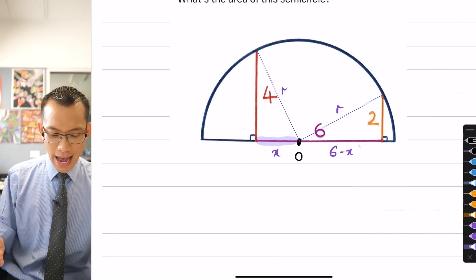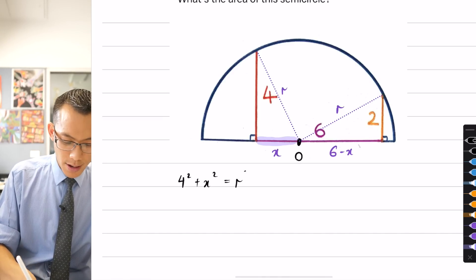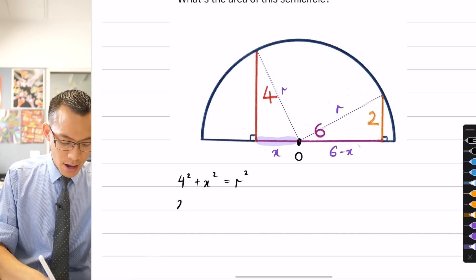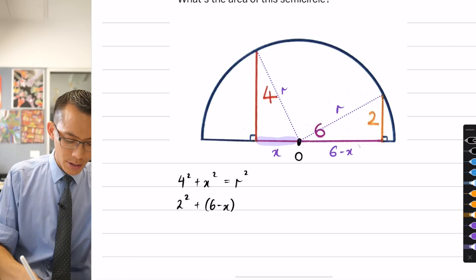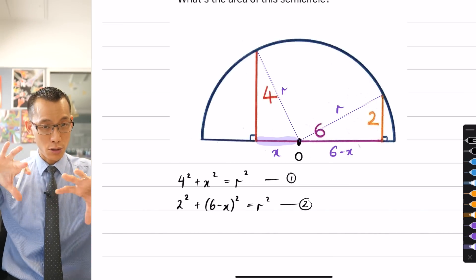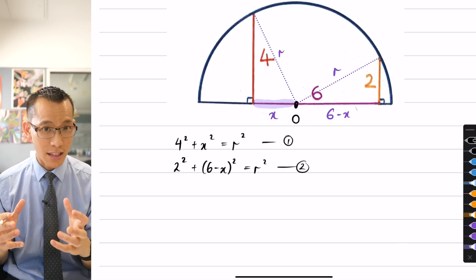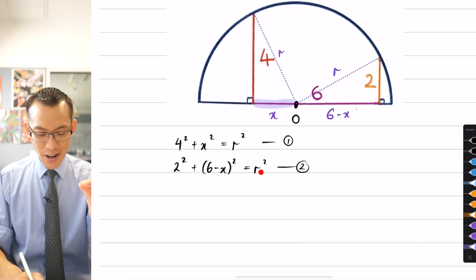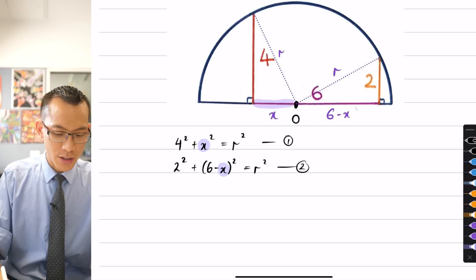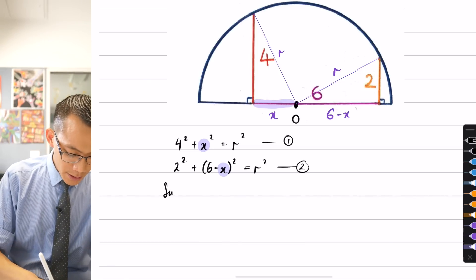Now I have all my pieces. The radius appears in both right-angle triangles, so I'll use Pythagoras on each. For the left-hand triangle: 4² + x² = r². For the right-hand triangle: 2² + (6 − x)² = r². Since both equal r², I can substitute one into the other. That eliminates r — and even though I want r, eliminating it first gives me a single equation with single unknown x, which I can then use to recover r.